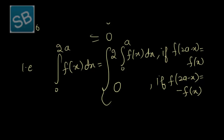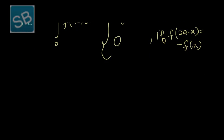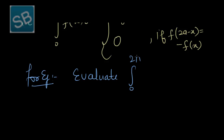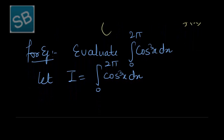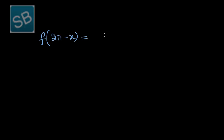Now we will solve a problem based on theorem 3.3. For example, evaluate the integral from 0 to 2π of cos³(x) dx. Let I equal the integral from 0 to 2π of cos³(x) dx. Here f(x) = cos³(x). We check: f(2π minus x) = cos³(2π minus x). Since cos(2π minus θ) = cos θ — cosine in the fourth quadrant is positive — we get cos³(x), which equals f(x).